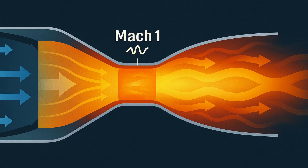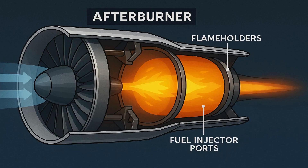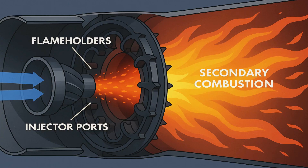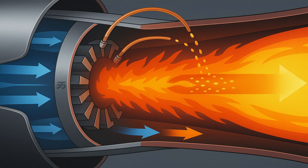Subtle adjustments in nozzle geometry let modern engines optimize performance across different flight conditions. Military engines add another stage — the afterburner. In this section, extra fuel sprays into the hot exhaust and ignites, creating a second flame. A ring of flame holders stabilizes this burn. Temperatures climb even higher, and thrust can nearly double. Pilots use afterburners for rapid acceleration during takeoff or combat maneuvers, but the fuel cost is enormous. Every pound of thrust from an afterburner consumes far more fuel than normal operation.